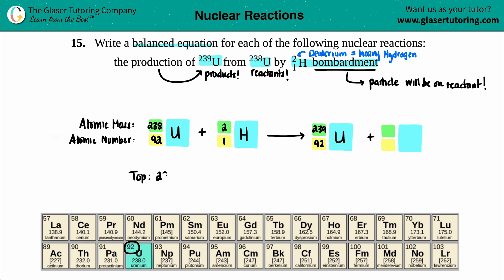We're going to take 238 plus 2, because those are the top numbers for the reactant side, and equal them to 239 plus x. We want to solve for that x. So 238 plus 2 is 240, equals 239 plus x. We know what the x is going to be. x is going to be equal to 1. So I know that my number on the top here has to be a 1.